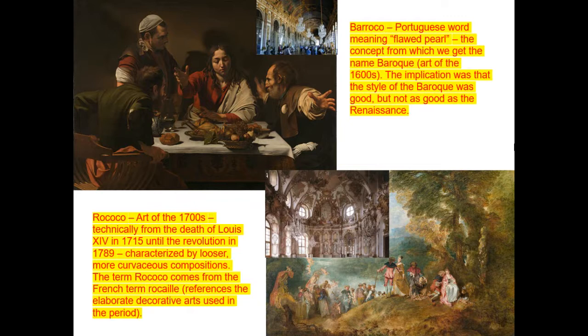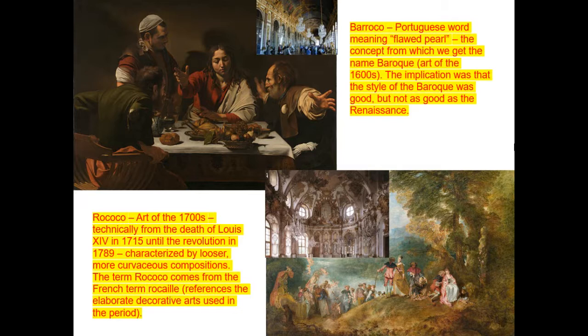The term 'Rococo' comes from the French word 'rocaille,' referencing the rocks and shells used in interior decoration. Baroque architecture, as gaudy as it is, at least has some straight lines and organization. The Rococo style is more about style than substance — there are no 90-degree angles, no right corners, just curves, gilding, and carving everywhere. Everything is a natural-looking shape; decoration is more important than rationality.